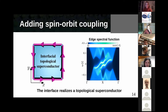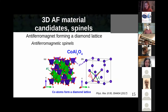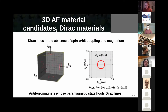Now the question is which kind of antiferromagnetic insulator we have to take. We need antiferromagnets whose electronic structure has gapped Dirac points. A simple way of finding these is looking for systems with antiferromagnetic diamond lattices, found in materials called spinels. In particular, cobalt aluminum oxide (CoAl₂O₄) is well known to be an antiferromagnetic diamond lattice and could be a possible candidate for getting 2D topological superconductivity. More generally, one can look for materials that have Dirac lines in the paramagnetic state that become gapped when they become antiferromagnetic.